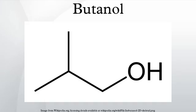Butanol refers to a four-carbon alcohol with a formula of C4H9OH. There are four possible isomeric structures for butanol, from a straight-chain primary alcohol to a branched-chain tertiary alcohol. It is primarily used as a solvent, as an intermediate in chemical synthesis, and as a fuel. It is sometimes also called biobutanol when produced biologically.